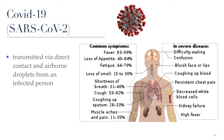COVID-19 is a new disease, so information may change as we learn more. The disease was first identified in December 2019 in Wuhan, China, and became a public health emergency of international concern in January 2020, subsequently recognized as a pandemic by the World Health Organization. It is caused by SARS-CoV-2 and was first isolated from three people with pneumonia connected to a cluster of acute respiratory illness in Wuhan. The disease is believed to have a zoonotic origin, possibly from a bat or a pangolin based on genetic analysis of the virus.